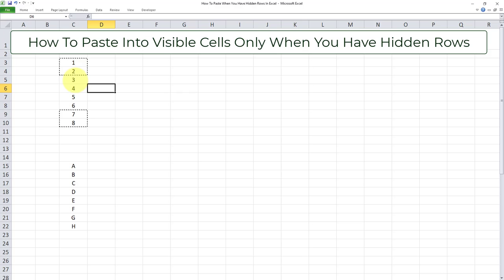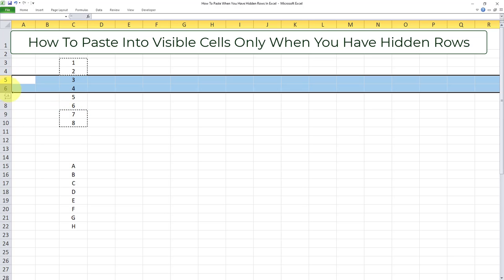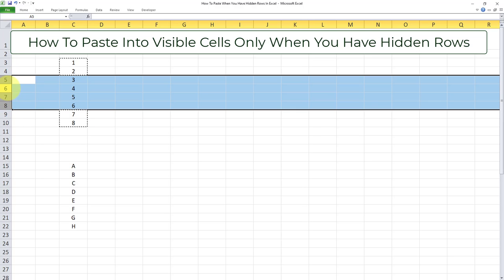And I want the values, the hidden values, which is 3, 4, 5, and 6, which I will hide in a few moments to remain intact. So I'll go ahead and hide this range as it was hidden before.